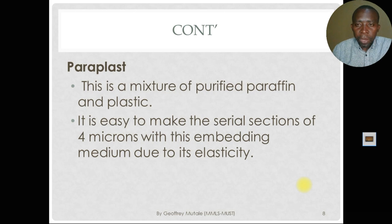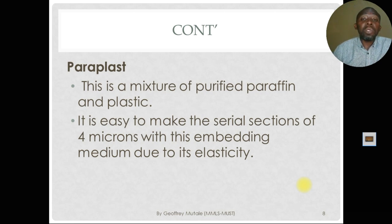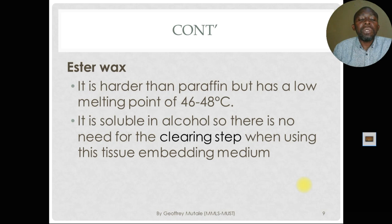Paraplast makes it easy to produce serial sections. We can make sections of about four microns due to its elasticity, which helps when dealing with very hard tissues. Because of its elasticity, paraplast enables us to make thin sections of about four microns even from challenging tissue types.